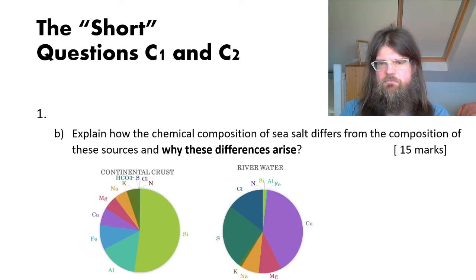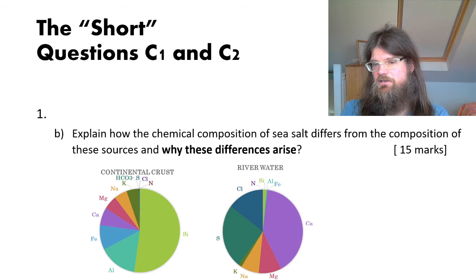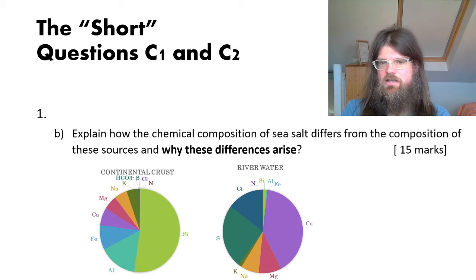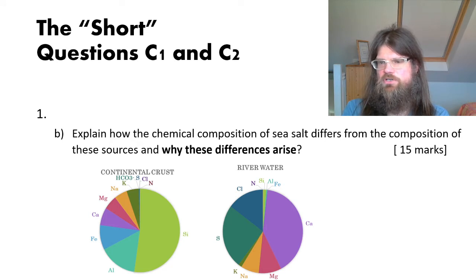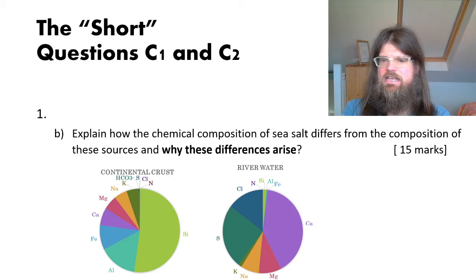There is fractionation during weathering, which is why river water elemental composition doesn't look like the rocks it gets ions from. Silicon makes up a large portion of rock but a very small portion of dissolved ions in river water, because calcium and sulfur are much more easily weathered from rocks than silicon.